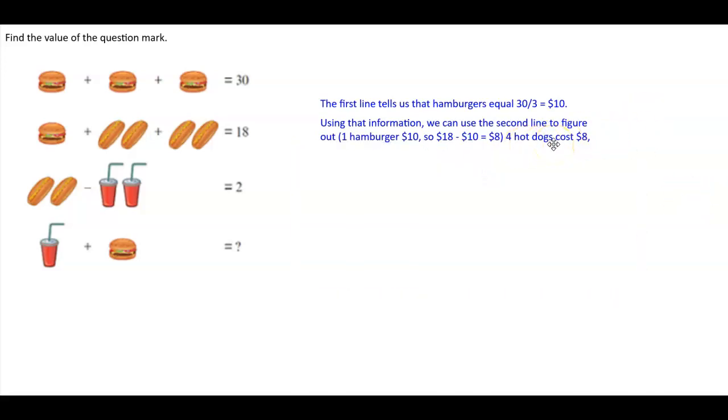And since there are four hot dogs with $8 left, that means four hot dogs total cost $8. So that means this costs $4 and two of those hot dogs cost $4. So technically we're taking 8 and dividing by two sets of hot dogs, which means that's $4.